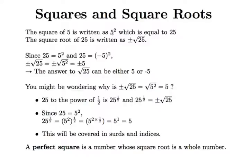The square of 5 is written as 5², or 5 to the power of 2. We've talked about this before — it equals 25 because 5 times 5 is 25.